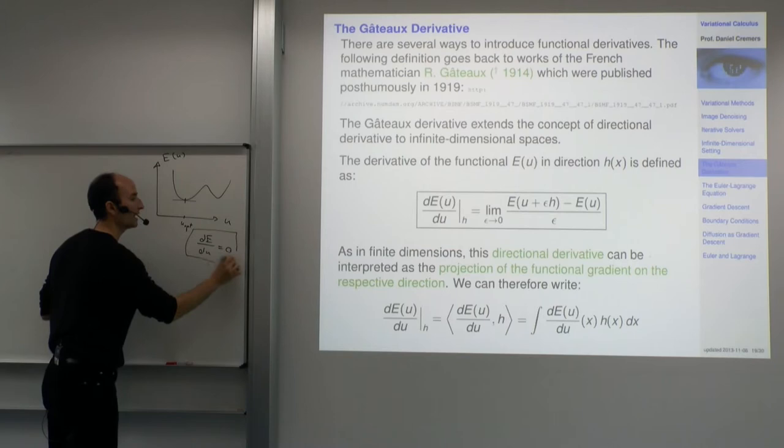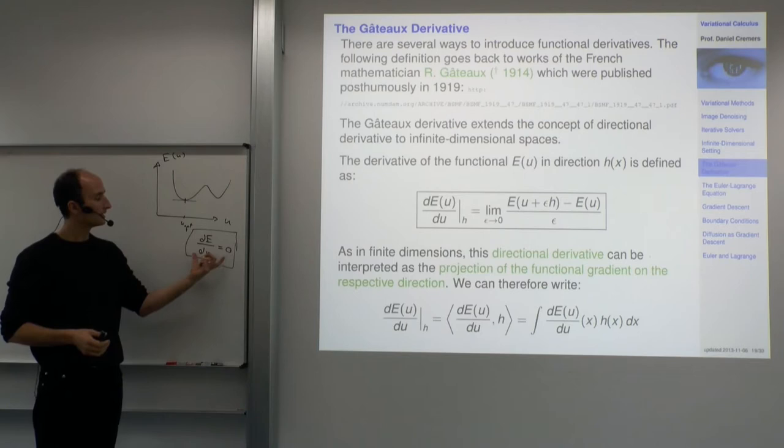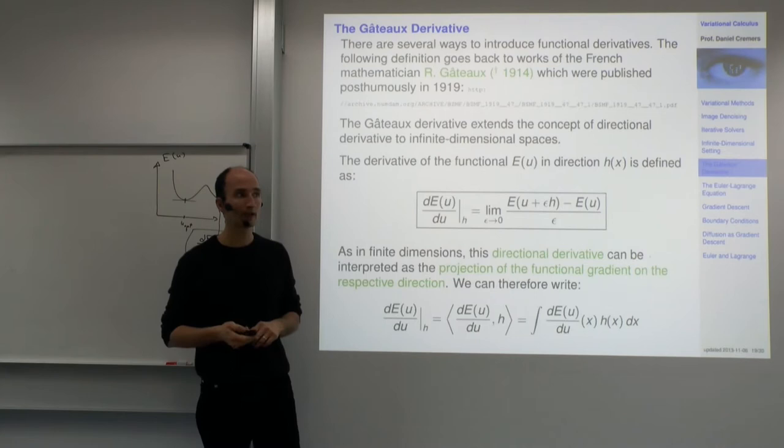This extremality principle, if E is a functional — meaning a mapping that assigns to a function u some value, some cost — then this equation is called the Euler-Lagrange equation. This is the key extremality principle that we aim to resolve. Let's look at how we derived it.